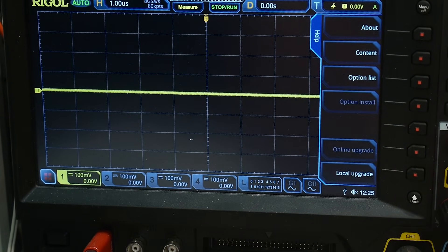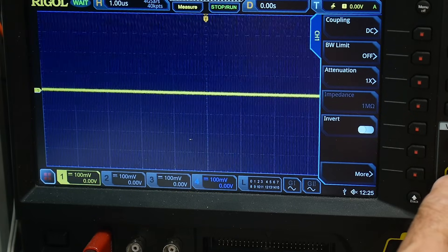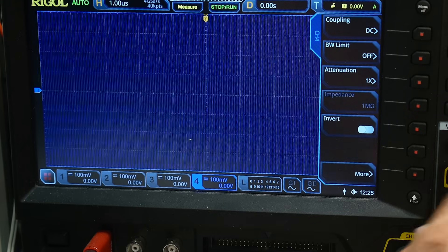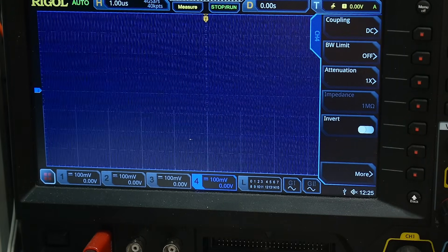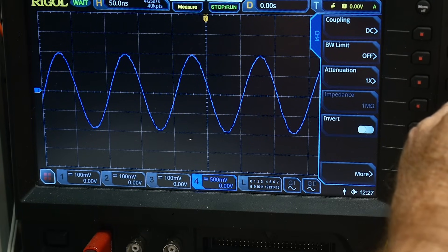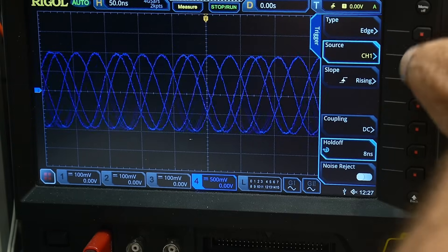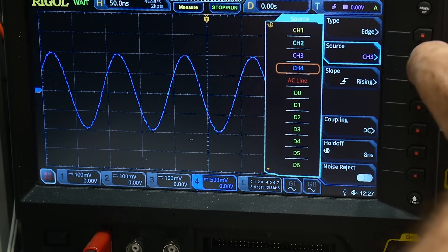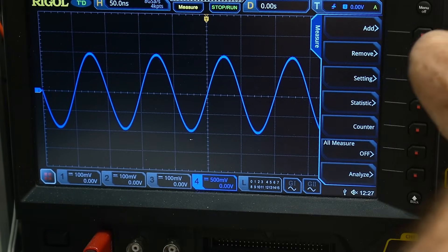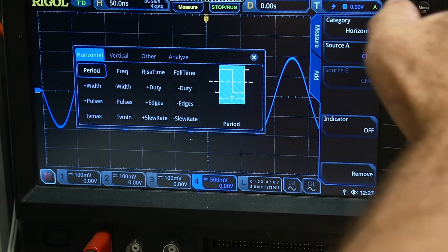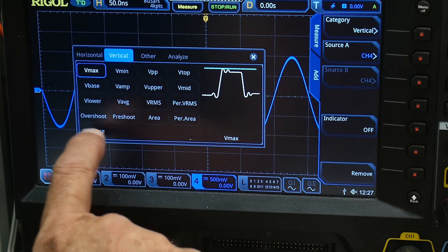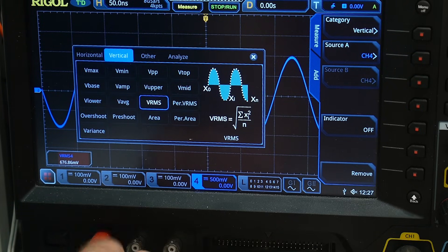Let's kind of scoot this over so you can see it better. So let's go to channel 4, turn off channel 1, and we will tell channel 4 to be smaller. Let's take a look at it. Let's do triggering on channel 4, of course. There we go, and we'll set up a measurement for vertical, and we want volts RMS right there.